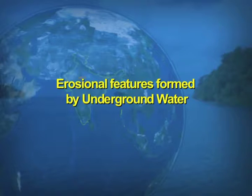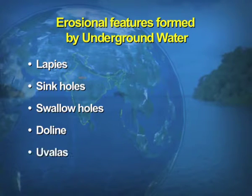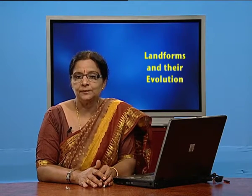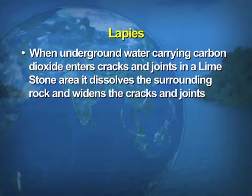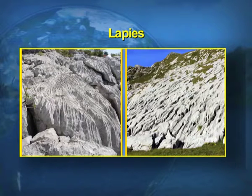Erosional features formed by underground water include lappies, sinkholes, swallow holes, dolines, uvalas, and caves. When underground water carrying carbon dioxide enters the cracks and joints in a limestone area, it dissolves the surrounding rock and widens the cracks and joints by its solution activity. The long furrows with vertical walls that are formed are known as lappies — deep furrows formed by the underground water.